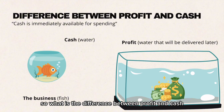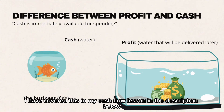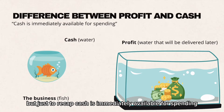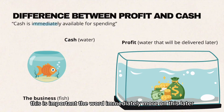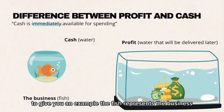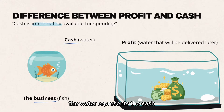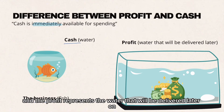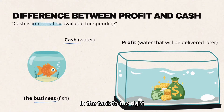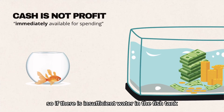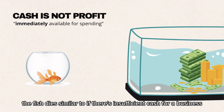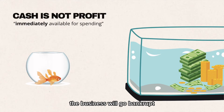What is the difference between profit and cash? Cash is immediately available for spending — the word 'immediately' is important. To give you an example: the fish represents the business, the water represents the cash, and the profit represents water that will be delivered later to the tank on the right. If there is insufficient water in the fish tank, the fish dies — similarly, if there is insufficient cash, the business will go bankrupt despite having a large profit on their income statement.